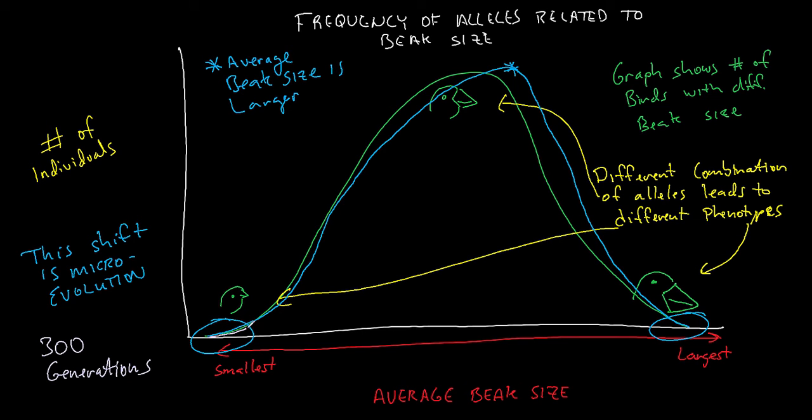And if this shift keeps happening, it might push further and further to the right of beak size, getting larger and larger. If the larger is always the advantage, the beak size is going to shift more and more to larger and larger.